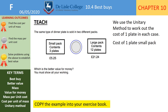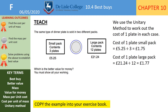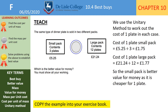In the small pack, the cost of one plate is £5.25 divided by 3, which is £1.75. In the large pack, the cost of one plate is £21.24 divided by 12, which is £1.77. The small pack is better value as it is cheaper per plate. Make sure you go back and answer the question — as an experienced GCSE exam marker, we often see students arrive at £1.75 and £1.77 but lose the final mark because they failed to answer the question.